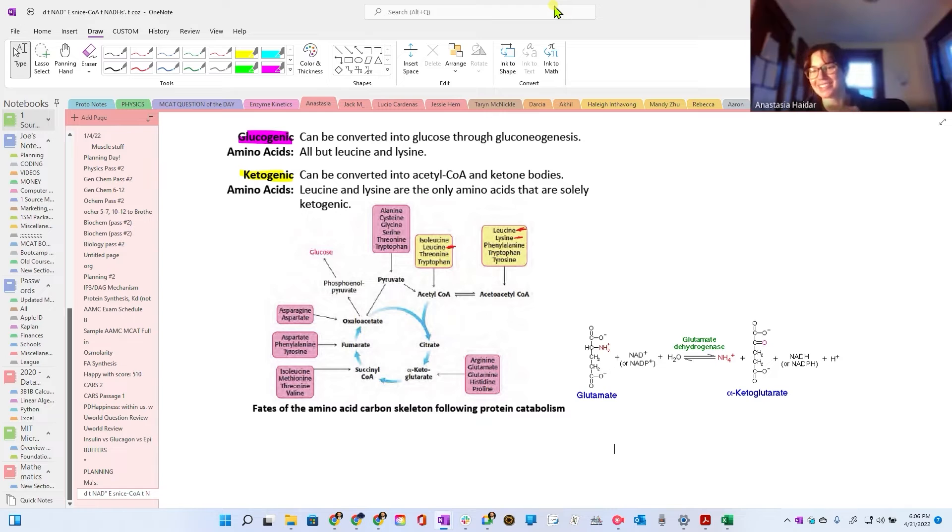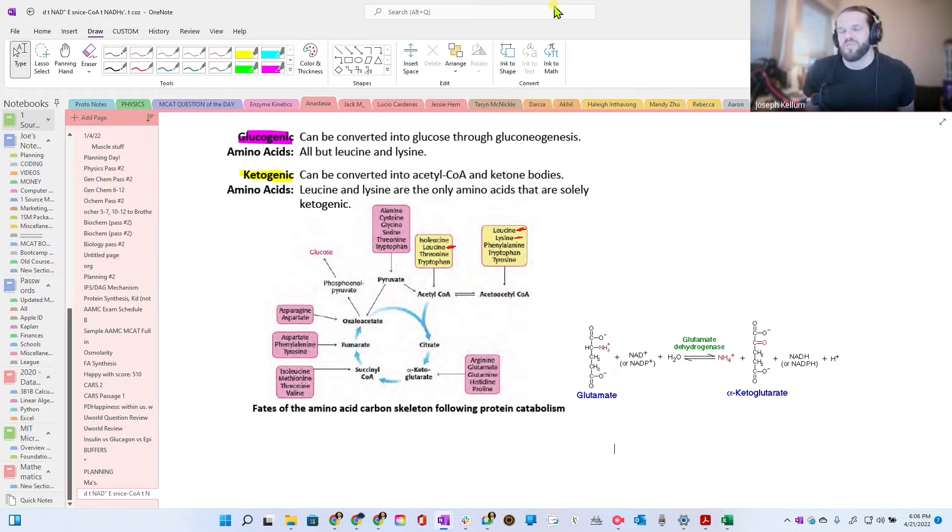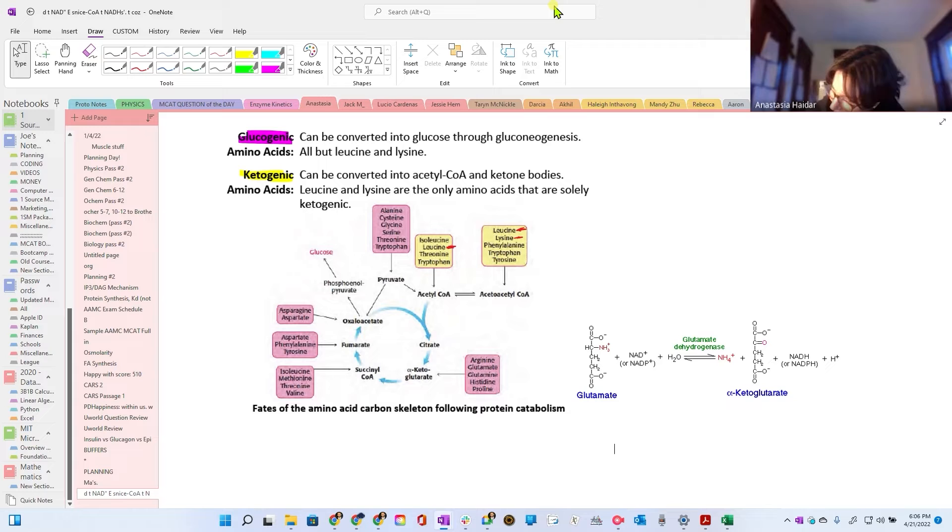Maybe that was true at some point in time, but then one mitochondrion in one cell somewhere found out that if it made two of each enzyme, then it would beat the others. And so then all of them started doing that.